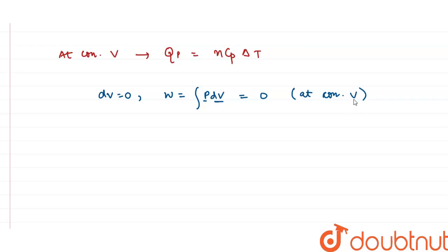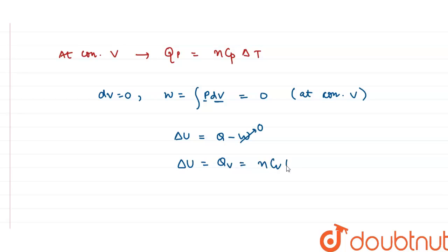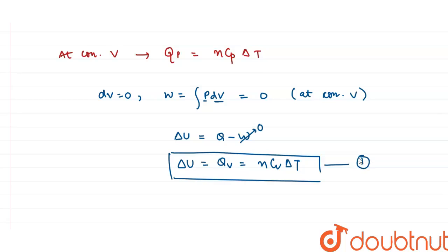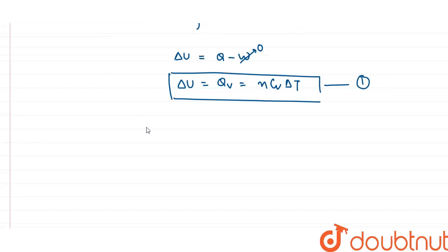From the first law of thermodynamics, change in internal energy ΔU = Q − W. Since W = 0 at constant volume, the change in internal energy equals the heat at constant volume, which is ΔU = nCvΔT. This is equation one.